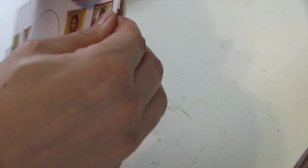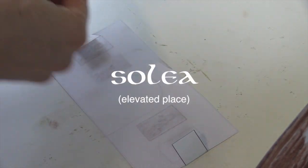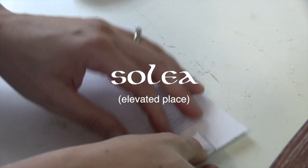Bend tabs back and place a piece of tape on top of each side. Attach the ikonistasis icon stand along the line that separates the solea, which means elevated place, from the bema.